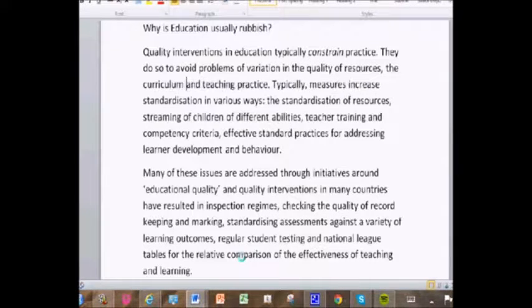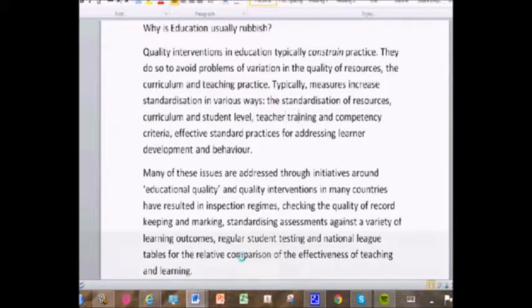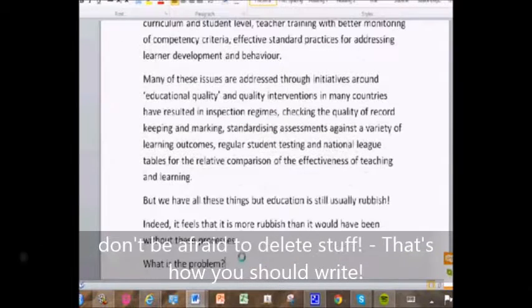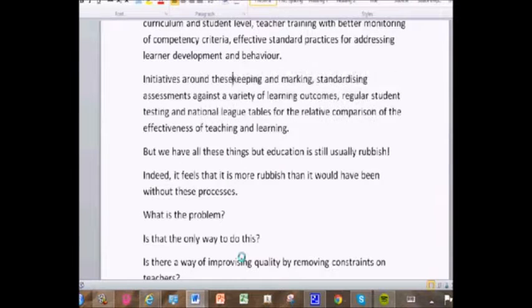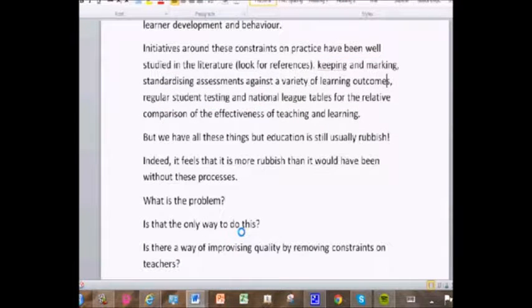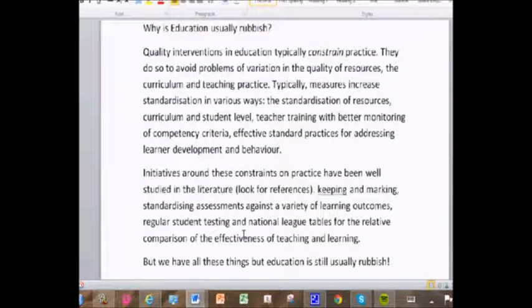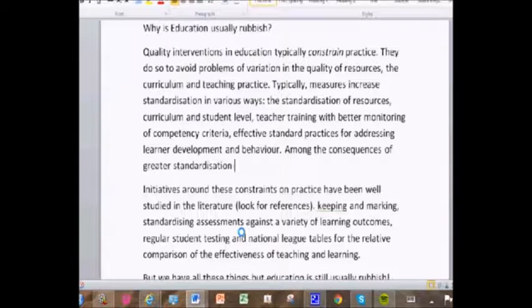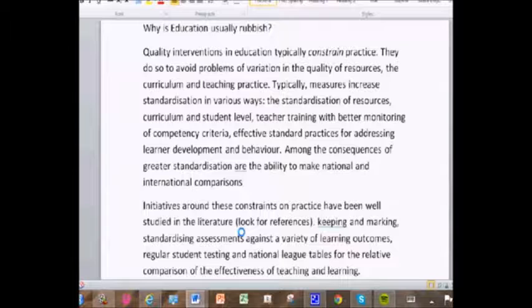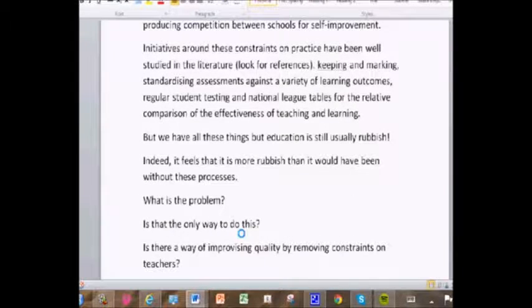Okay, well, they do so to avoid problems of variation in the quality of resources and teaching practice. And these measures take the form of, and so on. Now I'm just going through this, reading it over and over again, thinking, actually, we can make this a bit tighter. We need to talk about curriculum. I'm deleting quite a lot of stuff because it doesn't need to be there anymore. So I'm looking at the second paragraph. So we are talking about constraints. Issues around these constraints on practice have been well studied in the literature. Yes. Because I know I can now start looking for the different ways in which people constrain practice. So I'm just thinking, what do I do with that second paragraph?